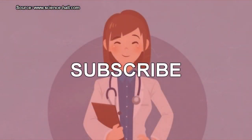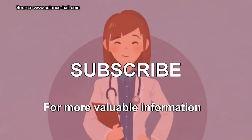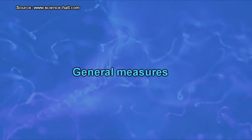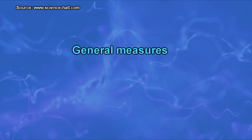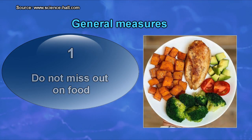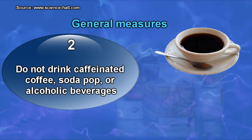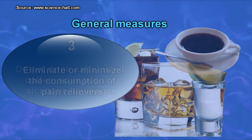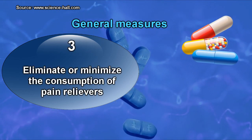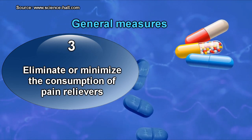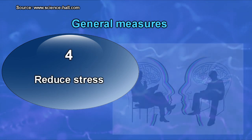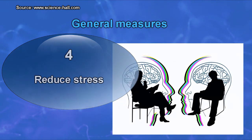General measures are intended to eliminate the causes that gave rise to gastritis and include: do not skip meals; eat at least three meals a day on schedule; do not drink caffeinated coffee, soda, or alcoholic beverages; eliminate or minimize consumption of pain relievers that irritate the stomach, such as non-steroidal anti-inflammatory drugs; if an analgesic is required, acetaminophen will be preferred; and reduce stress, for which professional support should be sought.